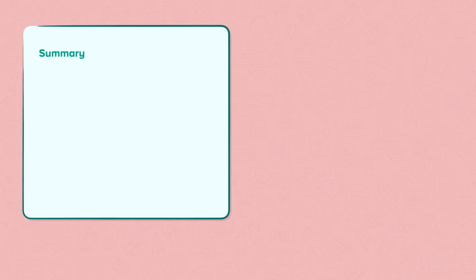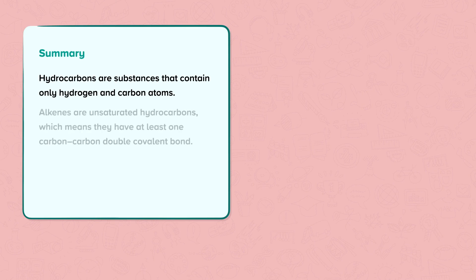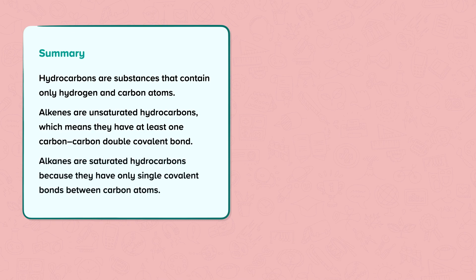Summary. Hydrocarbons are substances that contain only hydrogen and carbon atoms. Alkenes are unsaturated hydrocarbons, which means they have at least one carbon-carbon double covalent bond. Alkanes are saturated hydrocarbons because they have only single covalent bonds between carbon atoms.